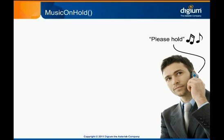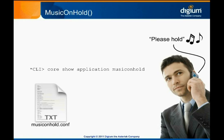There are many configuration options you can tweak, so looking at the CLI help and the sample musiconhold.conf configuration file are a good idea. You can configure Music on Hold to play arbitrary sound files of your own choosing, but you should be aware that there may be license or copyright concerns depending on your jurisdiction.